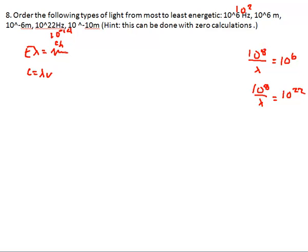Anyway, what you have to do now is put it from most to least. So, if we look at this equation, the smallest wavelength is going to give us the highest energy. Well, this is the smallest wavelength.